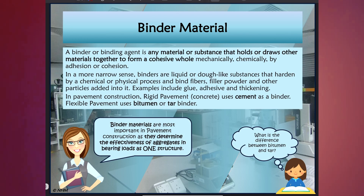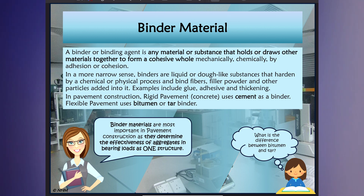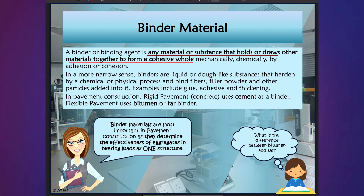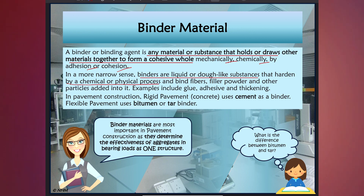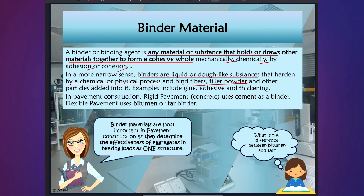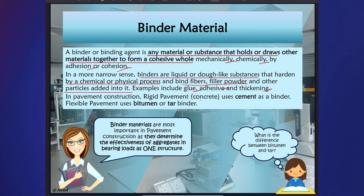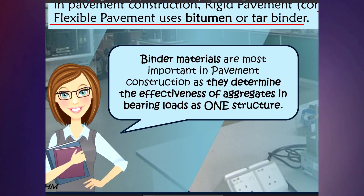Now let's move on to the binder material, which is also the key of a good flexible pavement construction design. A binder or binding agent is any material or substance that holds or draws other materials together to form a cohesive whole, mechanically or chemically. Binders are liquid or dough-like substances that harden by chemical or physical processes and bind fibres, filler powder and other particles. In pavement construction, rigid pavement uses cement as a binder, and flexible pavement uses bitumen or tar. Binder materials are most important in pavement construction as they determine the effectiveness of aggregates in bearing loads as one structure.